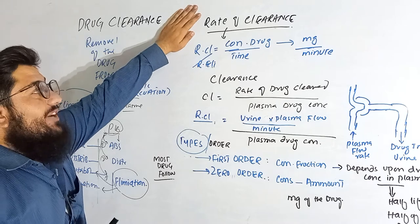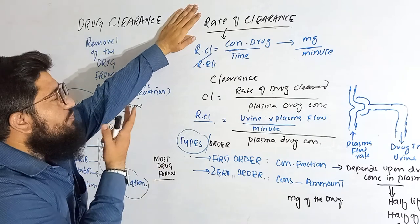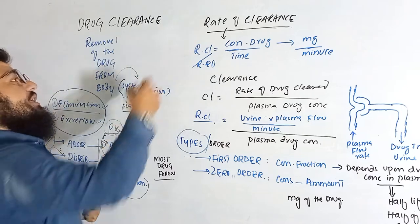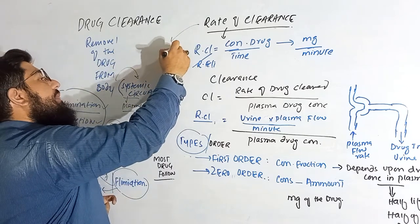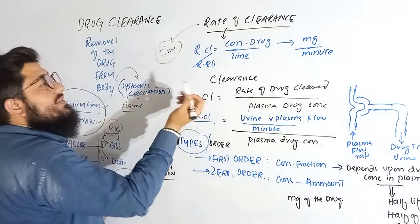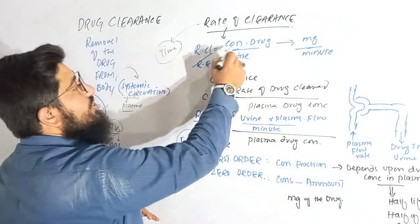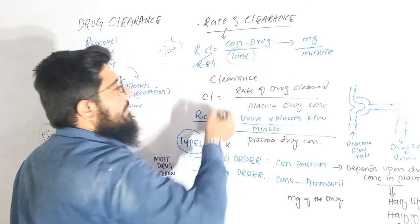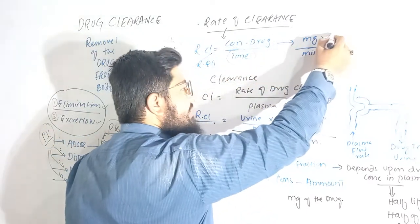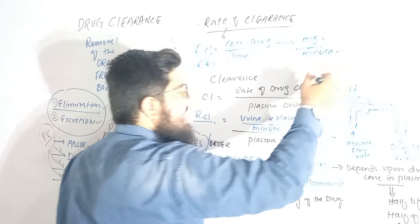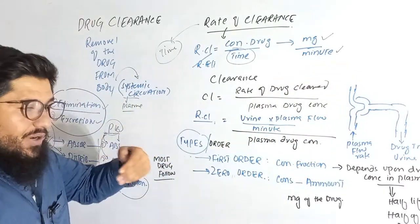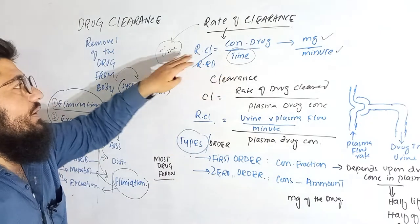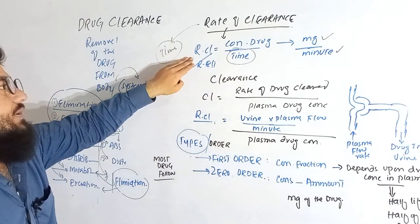Coming to the next point: rate of clearance. Whenever we talk about rate, we mean time. Rate of clearance is the concentration of the drug cleared from the body with respect to time — that is, milligrams of drug cleared from the body per minute. This is called rate of clearance.